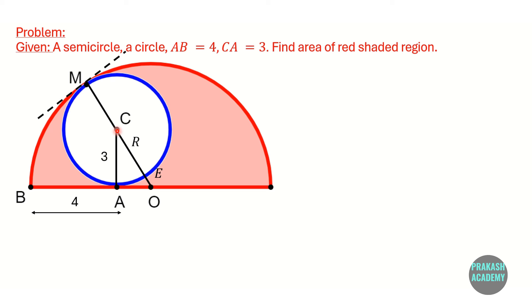This can be proven: since M is a common point of contact, we can draw a common tangent at M. This tangent touches both the semicircle and the full circle. We know that a perpendicular drawn to a tangent passes through the centre. So this perpendicular passes through centre O of the bigger circle and also through centre C of the smaller circle. This means M, C, and O are collinear and all lie on the same line.